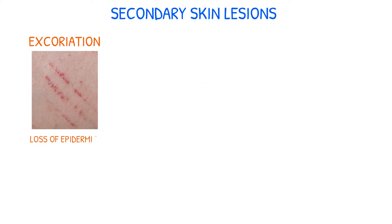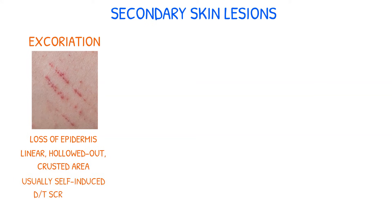An excoriation is an area of skin in which there is a loss of epidermis, exposing the dermis, resulting in a linear, hollowed out, crusted area. Excoriation is typically self-induced due to scratching. Examples include abrasions, scratches, and scabies.